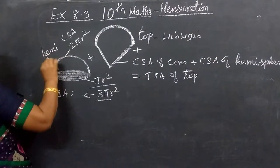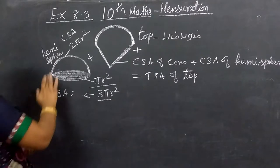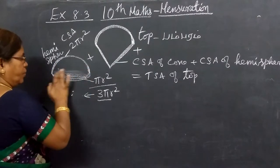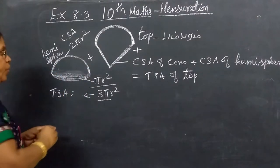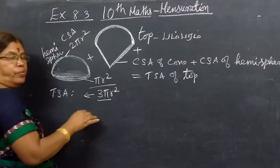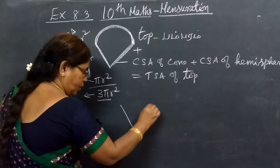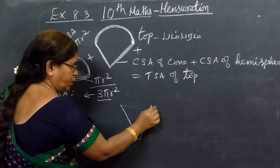Total surface area of hemisphere. That is the CSA meaning to work. But the outer part is the top, so we are using CSA.